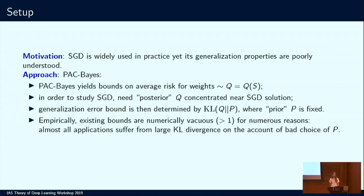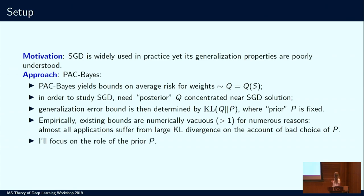Empirically, existing bounds are numerically vacuous for numerous reasons, and almost all applications suffer from a large KL divergence on account of the bad choice of this prior P. So in a lot of my recent work, which I'll be presenting in this talk, I focus on the role of the prior P in the PAC-Bayes bounds.